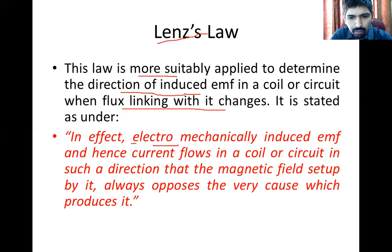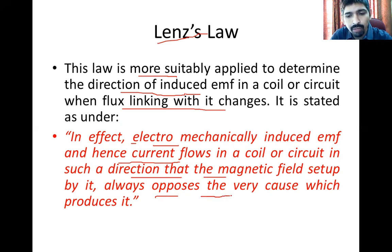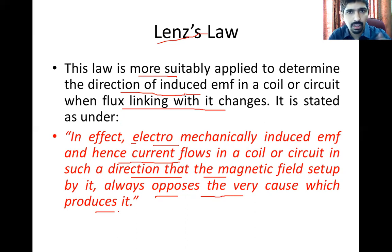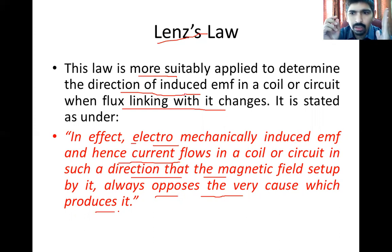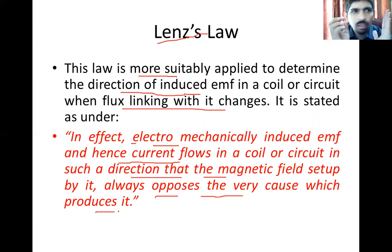In effect, the electromagnetically induced EMF — and hence current — flows in a circuit or coil in such a direction that the magnetic field set up by it always opposes the very cause which produces it. This is a little complex law that may feel confusing at first. The direction of induced EMF will always oppose the cause which is producing it.